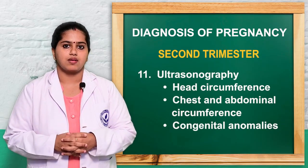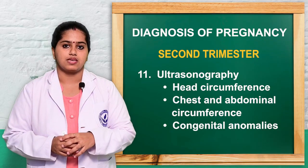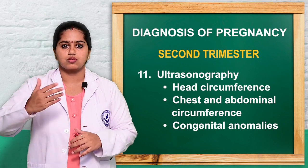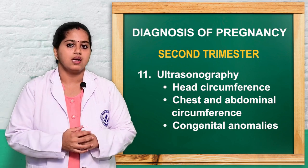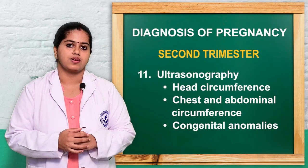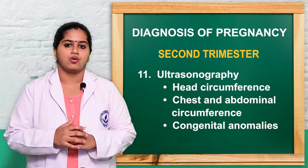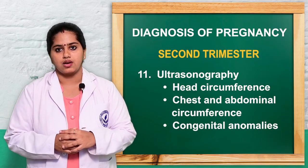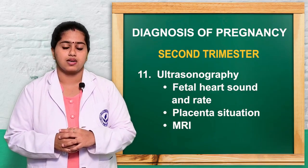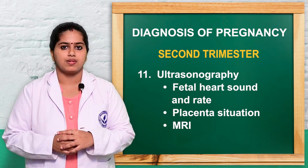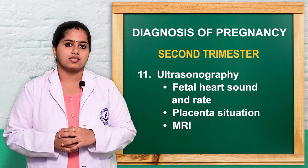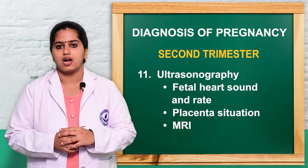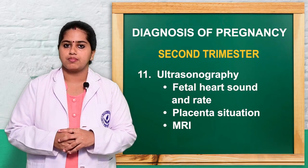In the second trimester, as a positive confirmation, ultrasonography is used. On ultrasound, fetal growth can be assessed, including abdominal circumference, chest circumference, fetal limb measurements, detection of gross congenital anomalies, fetal heart rate, fetal movement, placental site and implantation, and blood supply. MRI can also be performed.